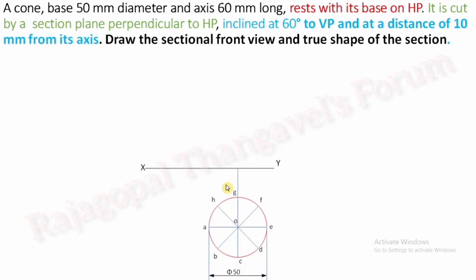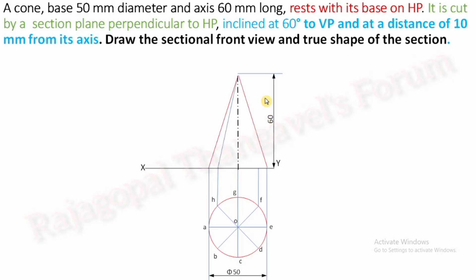Extend a projector from each division to complete the front view. The axis height of the front view is 60 mm. Complete the front view of the cone and add notations. As an observer from the front, A, B, C, D, E will be visible, but F, G, H are invisible. You can write notations in the intermediate divisions if needed. This is the simple position of the cone.